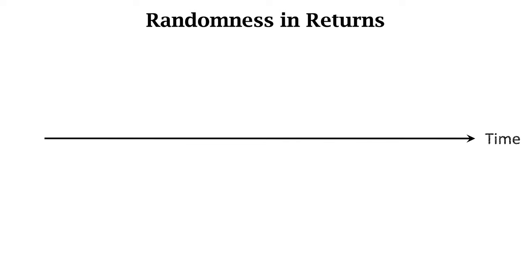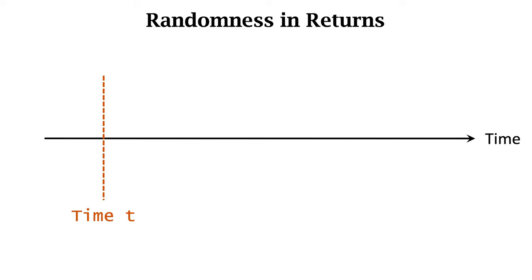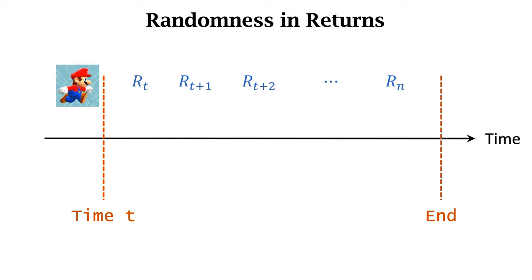Here I illustrate the randomness in rewards and returns. The axis is time. This is time t; this is the end of the game. Suppose we are currently at time t. We have not yet observed rewards RT to Rn. They are unknown random variables denoted by uppercase letters. UT is the sum of RT to Rn, thus UT is an unknown random variable.